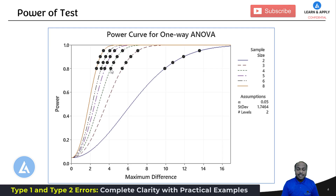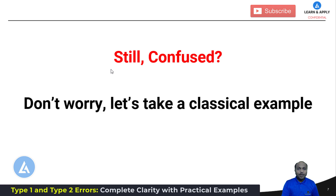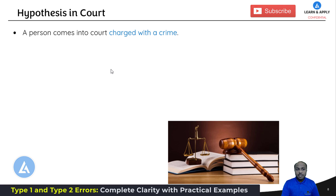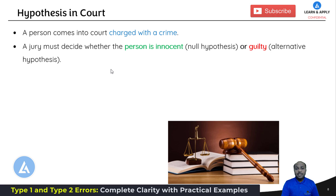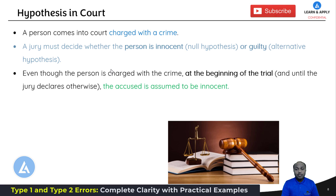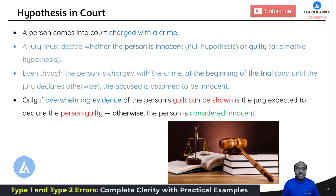As we had not seen any examples yet, let's take a classical example of the court. A person comes into court charged with a crime. A jury must decide whether the person is innocent or guilty. Here, when we say the person is innocent, this is the null hypothesis, and when we prove the person is guilty, it is the alternative hypothesis. Even though the person is charged with the crime, at the beginning of the trial the accused is assumed to be innocent — we are following the null hypothesis. Only if overwhelming evidence is present indicating the person is guilty, and the jury declares the person guilty, then the person is considered guilty. Otherwise, if there is no evidence to prove guilt, the person is innocent.